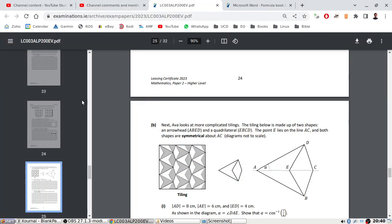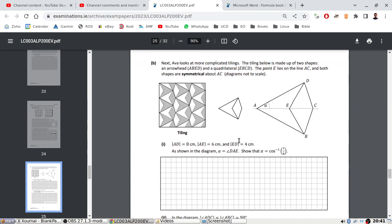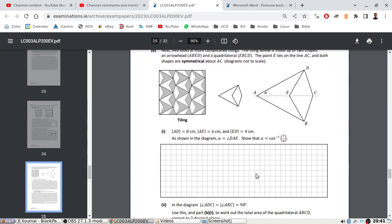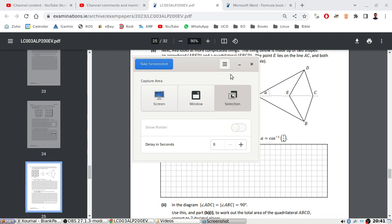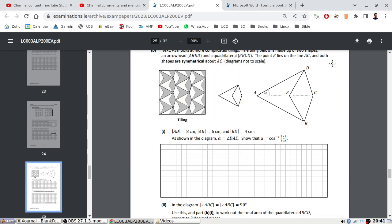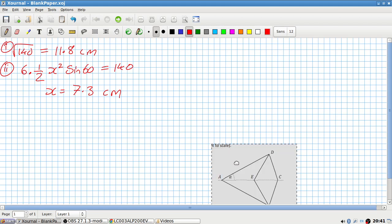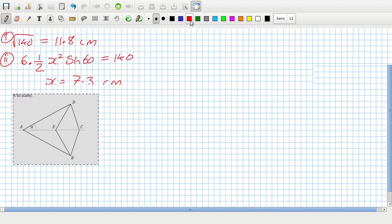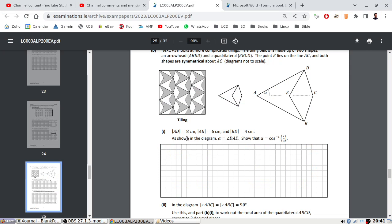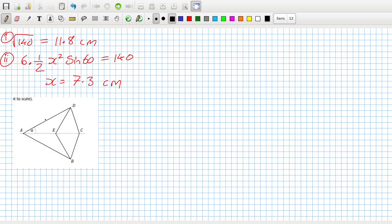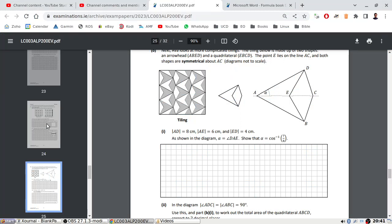Alright, part B now looks more complicated. Tiling is made of two shapes, an arrowhead and a quadrilateral. The point E lies on the line AC and both shapes are symmetrical.